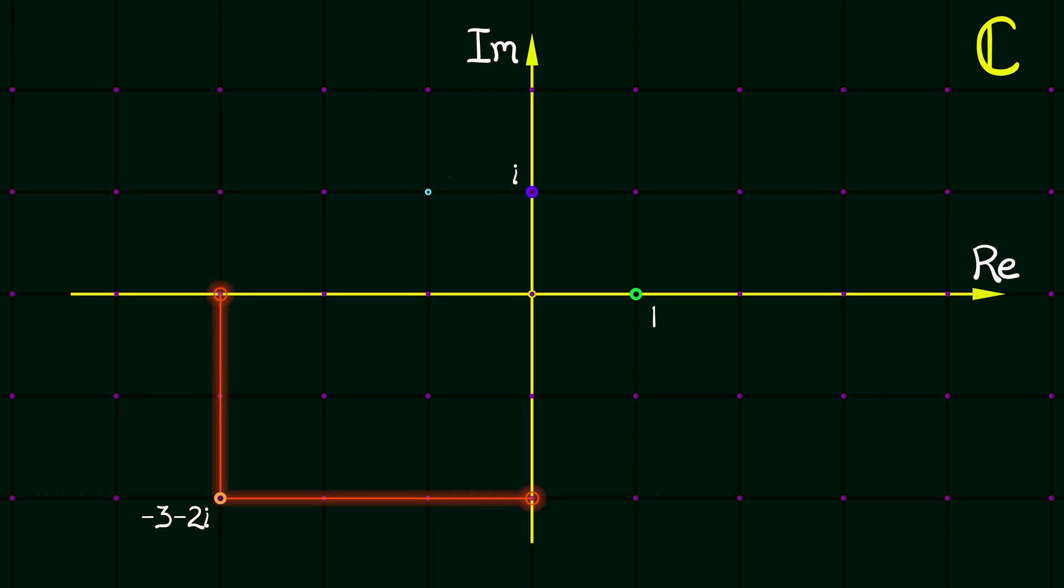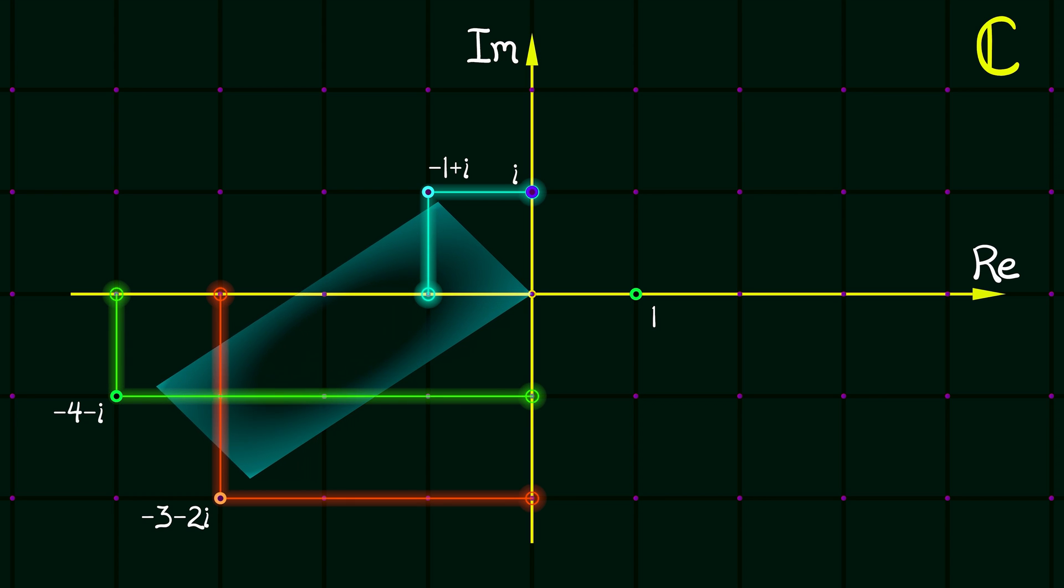Complex numbers are really cool. You can add them together, adding components—it's kind of like adding vectors. Or you can multiply. If you multiply a complex number by a real number, it stretches it out, rescaling both components.